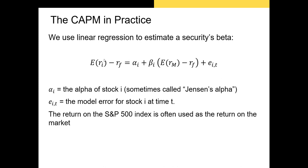So again, we have our expected return on stock i, but unlike the model form where the risk-free rate was on the other side, I've moved it over to the left-hand side, and we're adding two additional components. We have our alpha, which is sometimes called Jensen's alpha. This is going to be one of the most important metrics we have for indicating whether a security or portfolio outperformed the market for its level of beta.